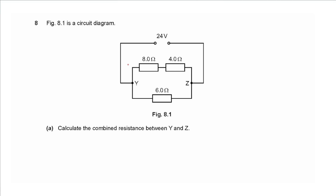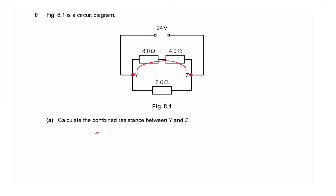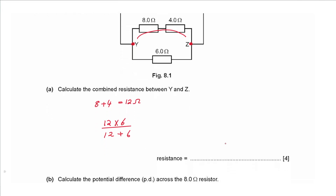Question 8: figure 8.1 is a circuit diagram. Calculate the combined resistance between Y and Z. From Y to Z there is a parallel connection; the upper branch has a series connection of 8 Ω and 4 Ω giving 12 Ω. This 12 Ω is in parallel with 6 Ω: using product over sum, 12 × 6 ÷ (12 + 6) = 4.0 Ω.